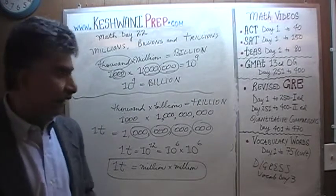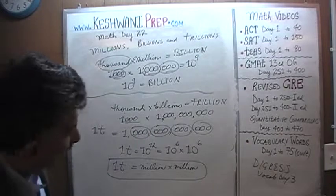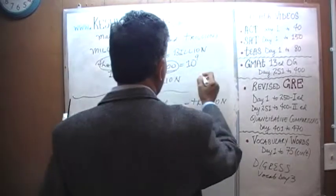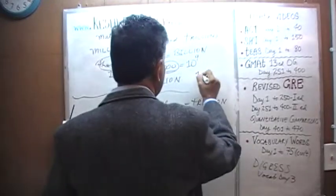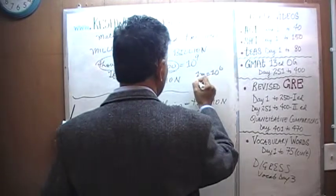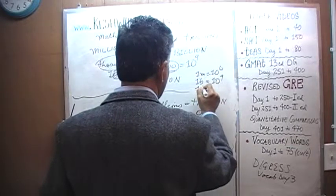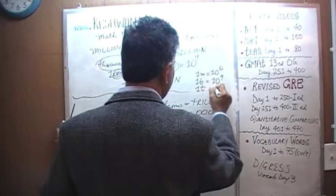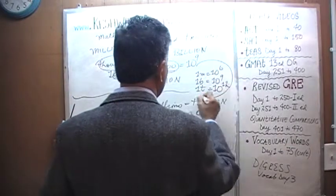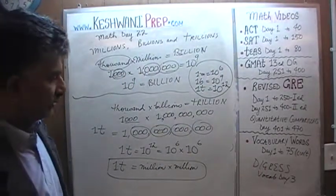So, one more time — let's recapitulate everything. A million has six zeros. A billion has nine zeros. A trillion has 12 zeros. That was the recapitulation of what we just learned.